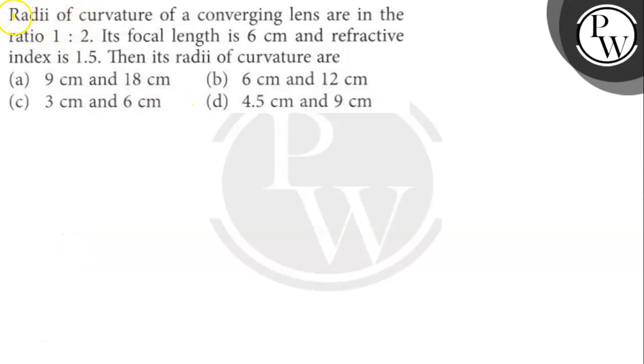Hello Bacho. Let's read the question. The question says here: Radii of curvature of a converging lens are in the ratio 1 to 2. Its focal length is 6 cm and refractive index is 1.5. Then its radii of curvature are what? Let's find out.